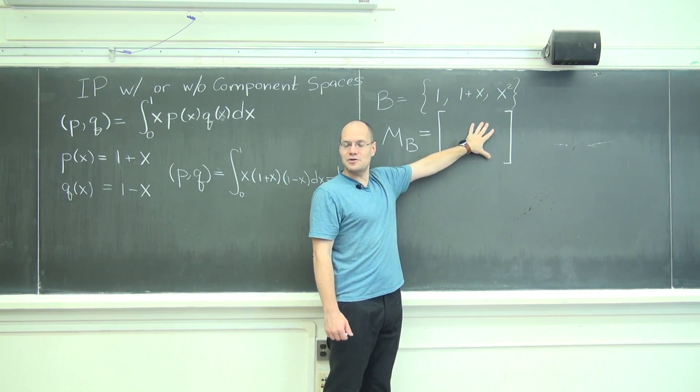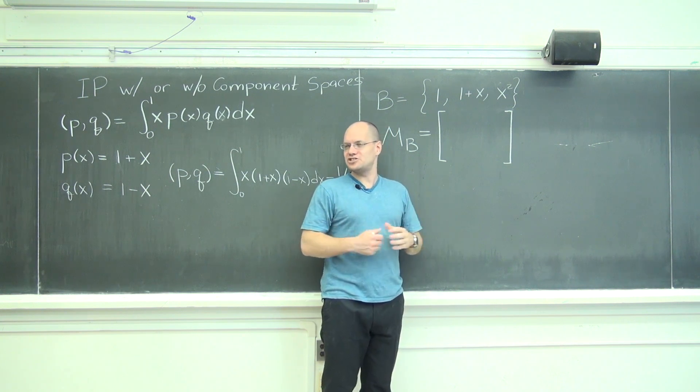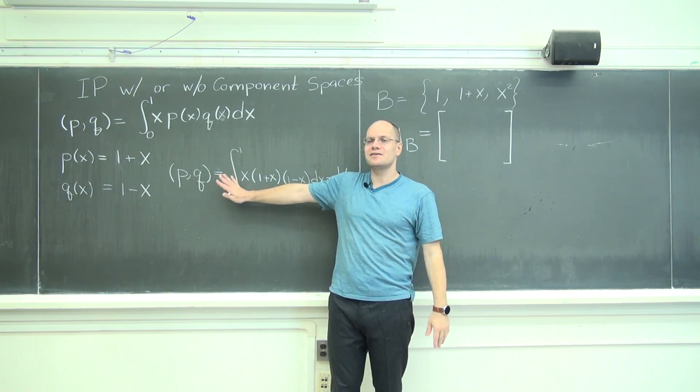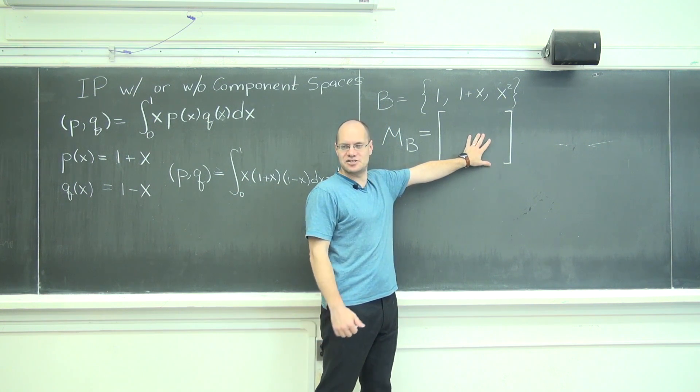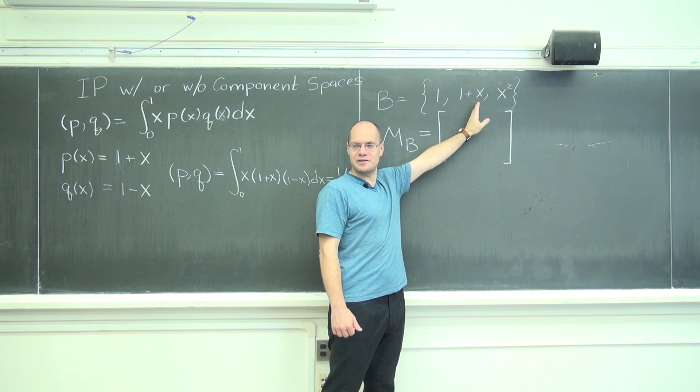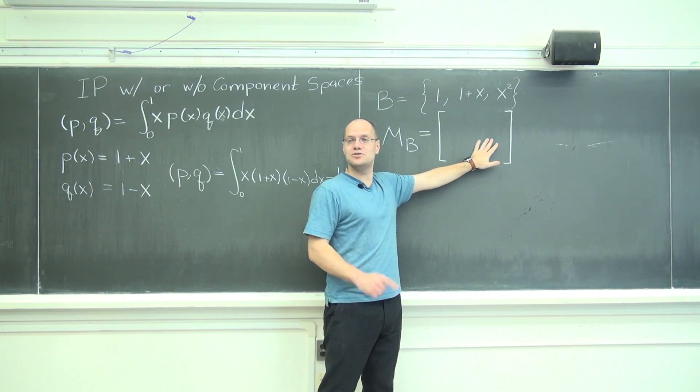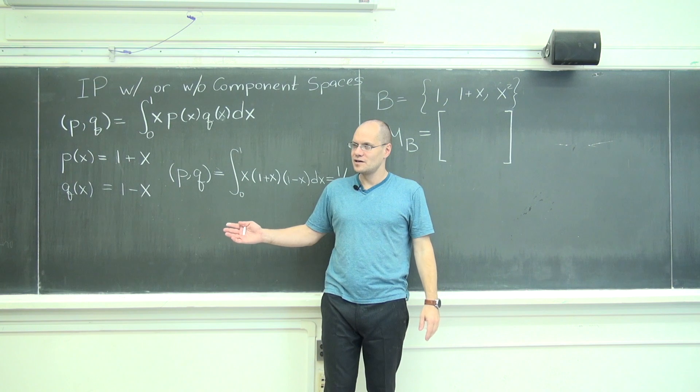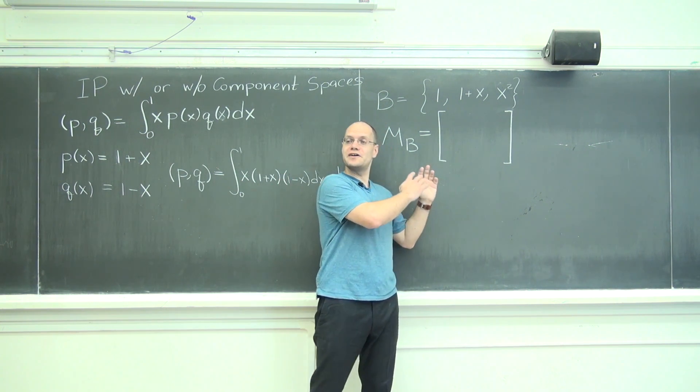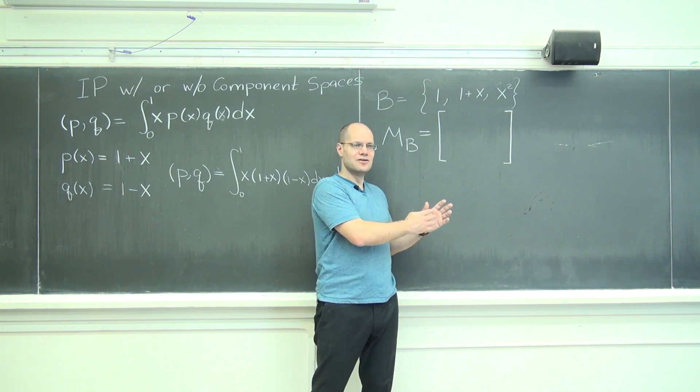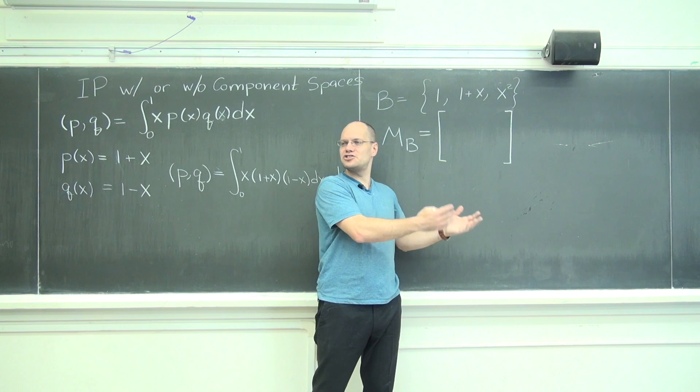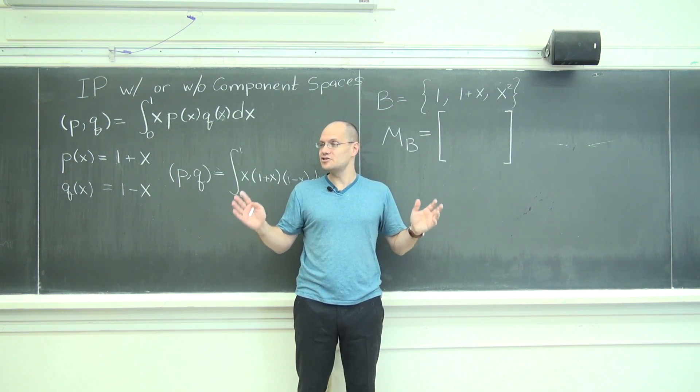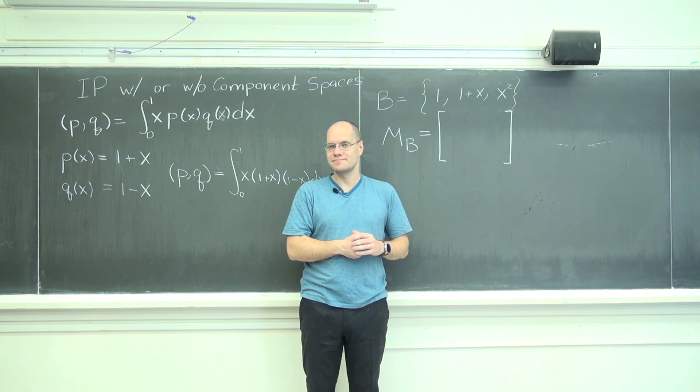And we will first evaluate that matrix that absorbs into it all of the information about the inner product. So much so that once you calculate this matrix, you never have to calculate another integral. Yes, we'll have to calculate six integrals for all possible distinct pairs of basis elements to construct this matrix. But once you do that, you never have to do another integral directly. You never have to do another inner product directly. Just like with linear transformations.